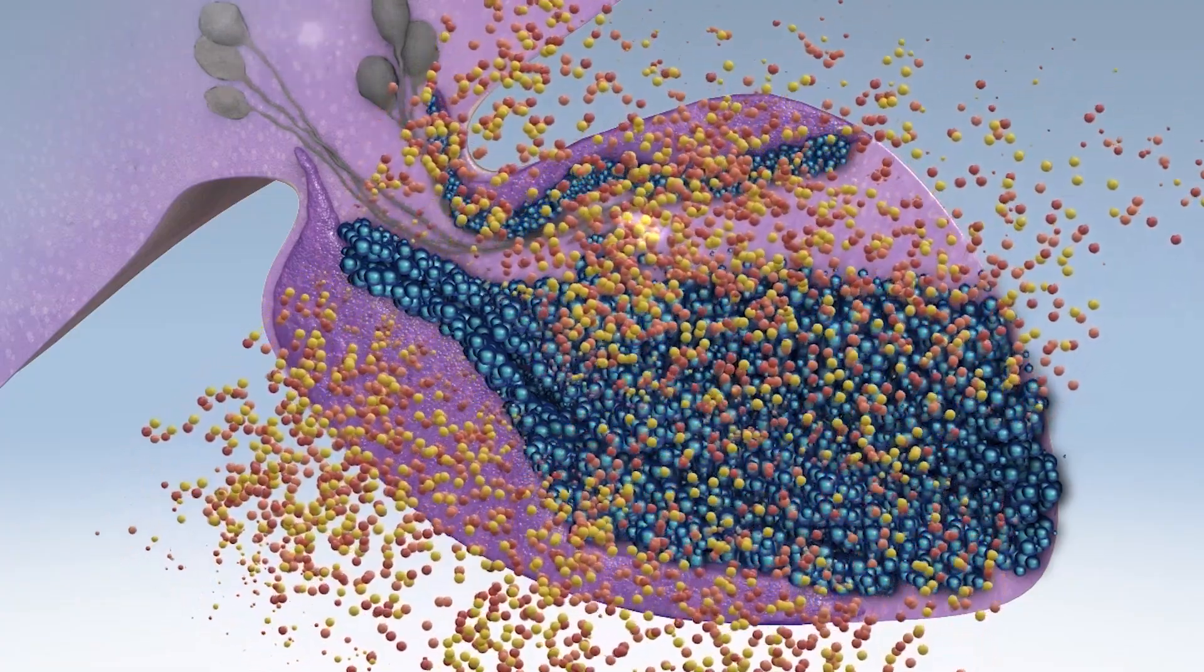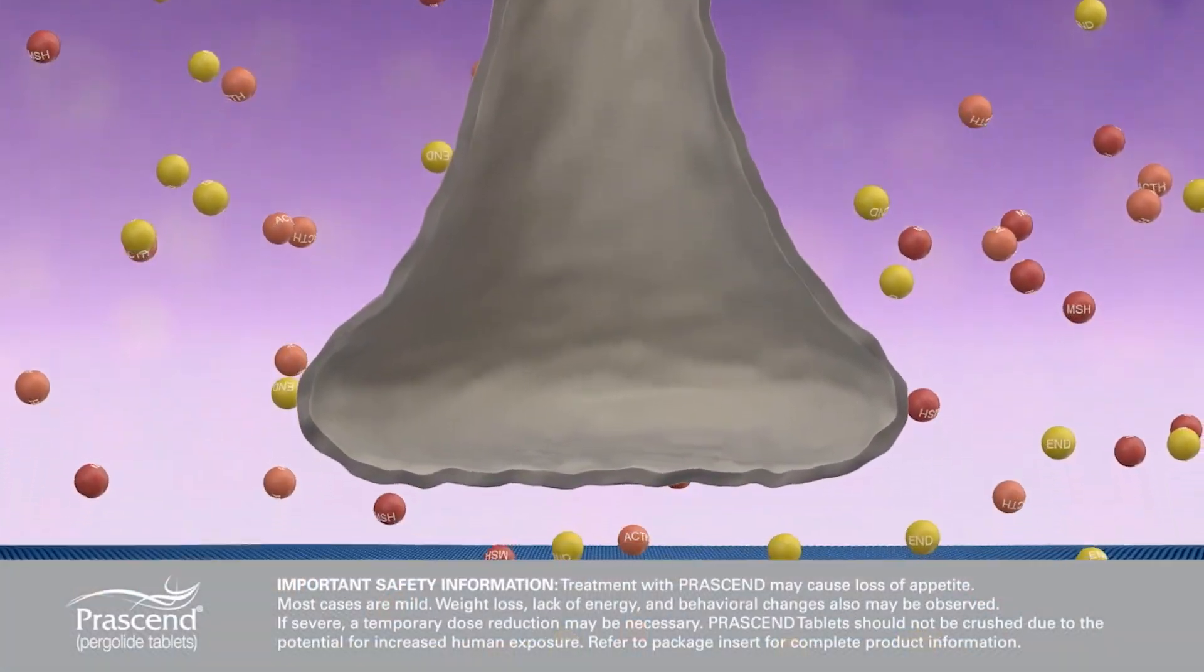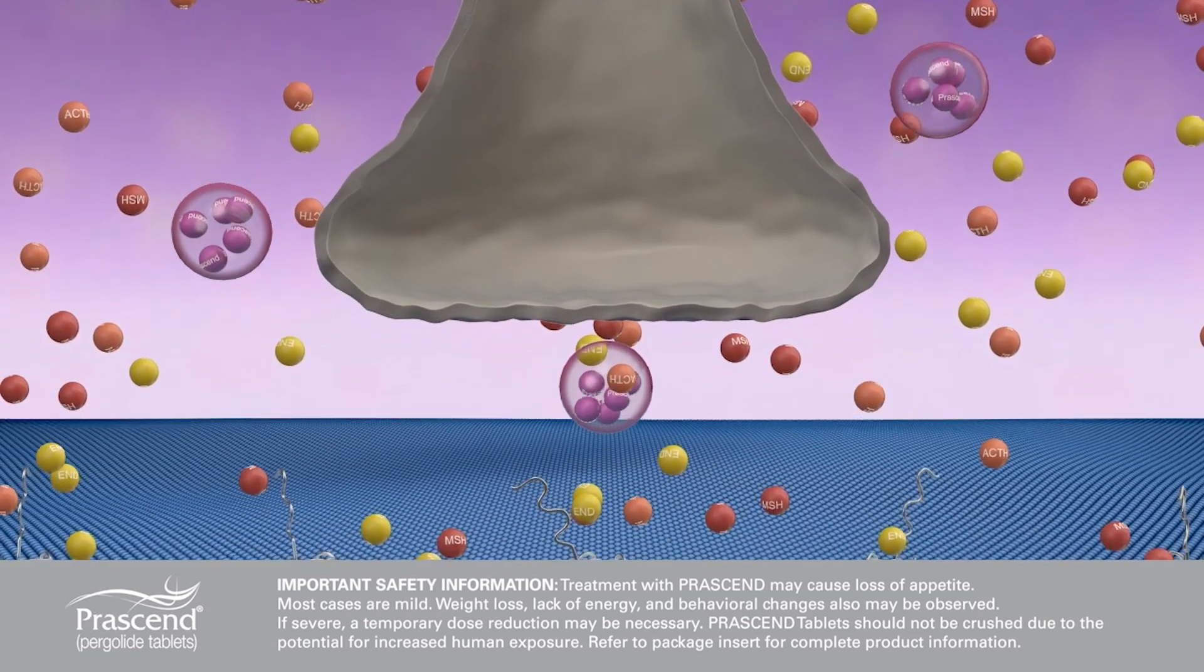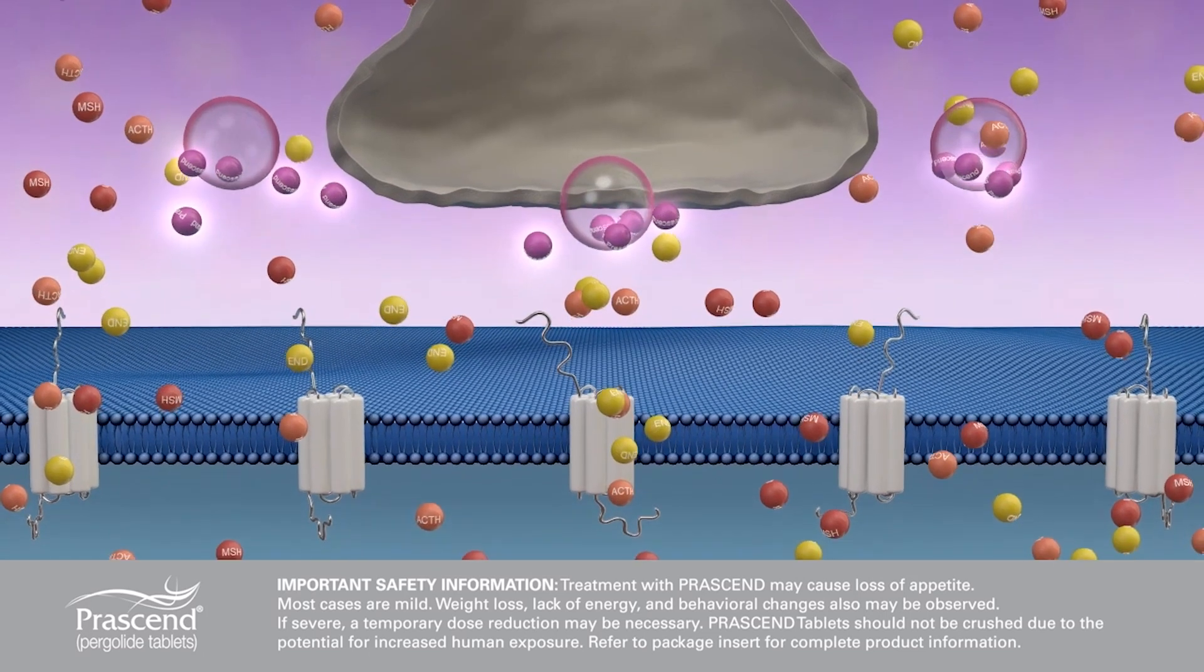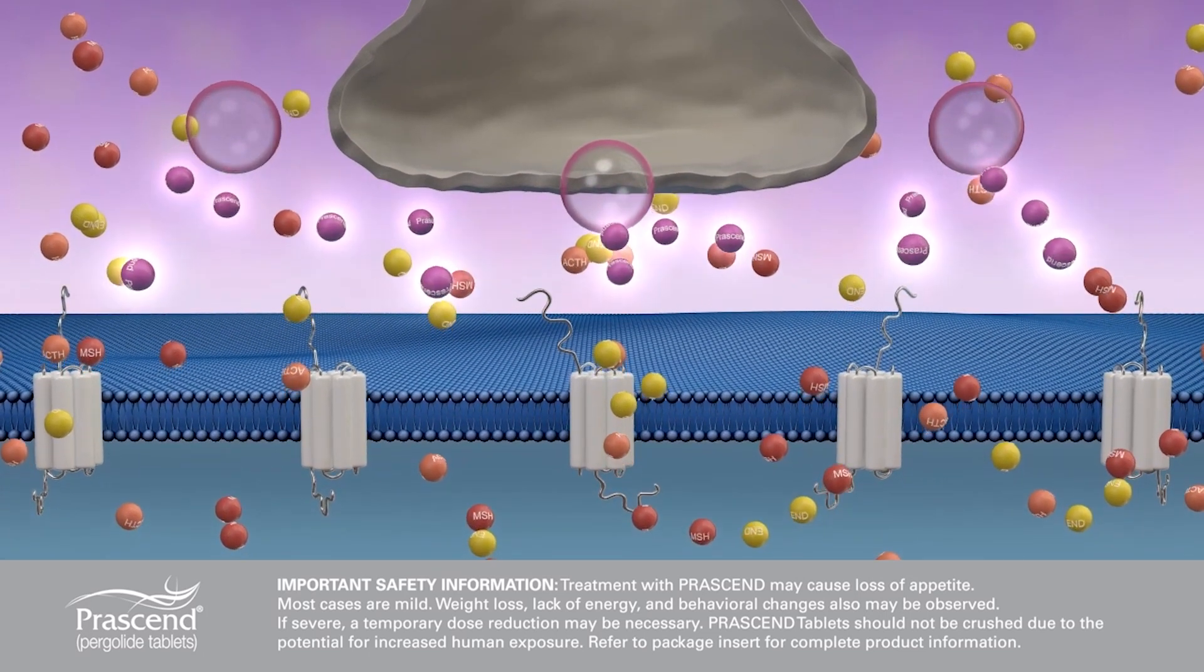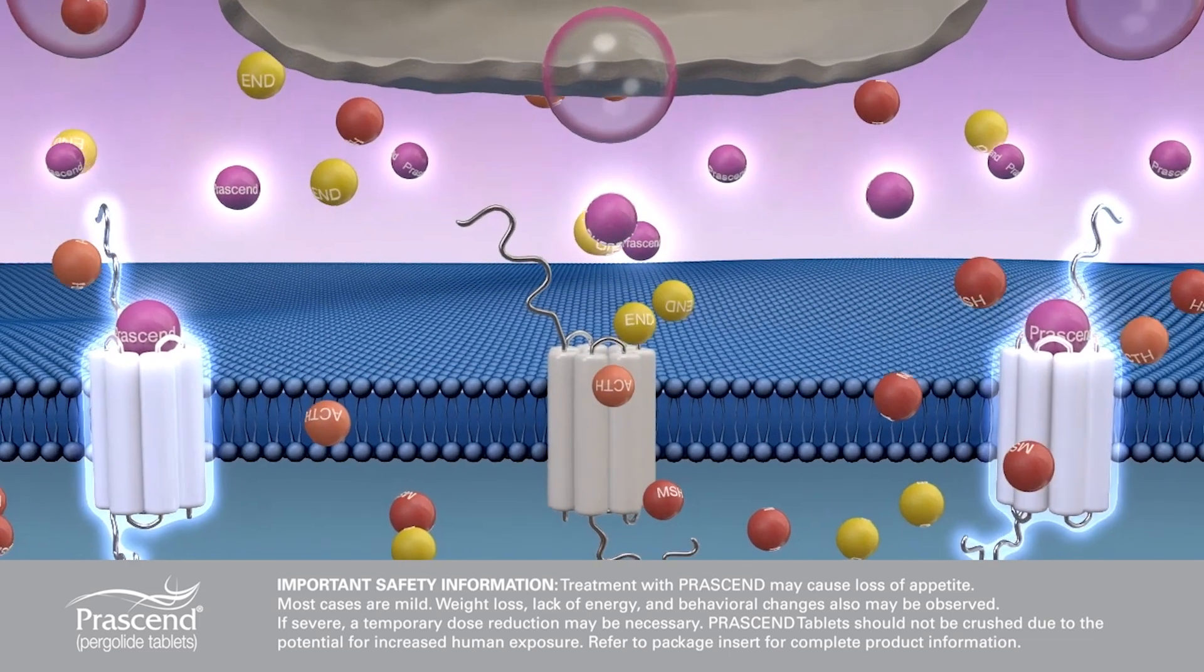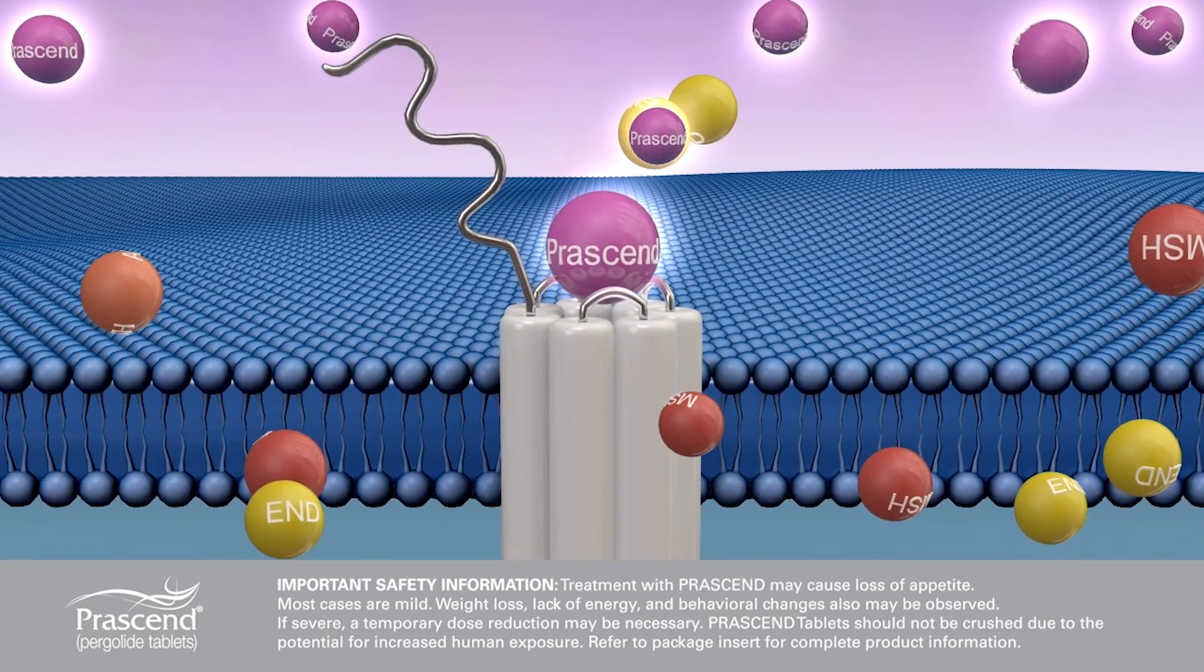The lack of dopamine in horses suffering from PPID can be managed by using Prascend. Prascend is a dopamine agonist. It acts to replace the dopamine that is missing from the intermediate lobe of the pituitary in horses with PPID. By binding to the dopamine receptor, Prascend decreases the secretion of hormones by the intermediate lobe.